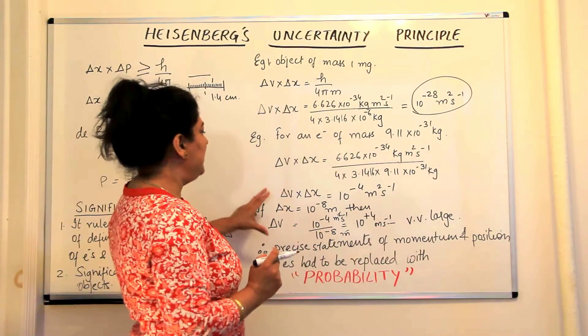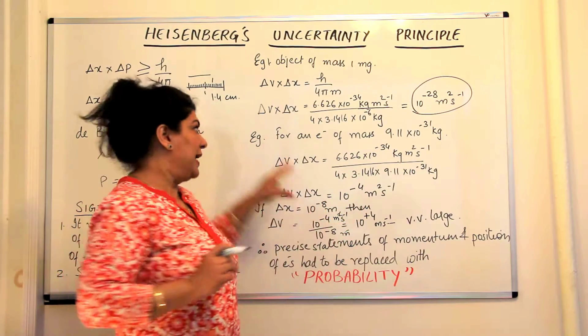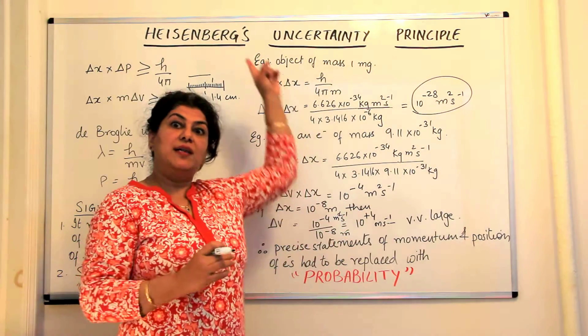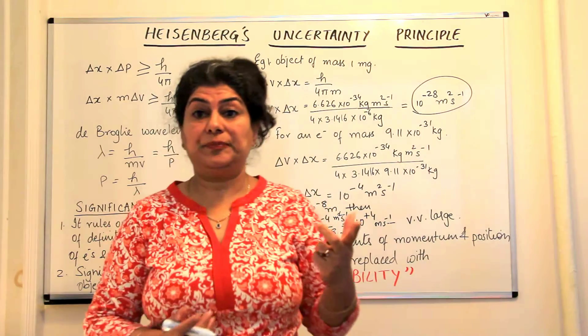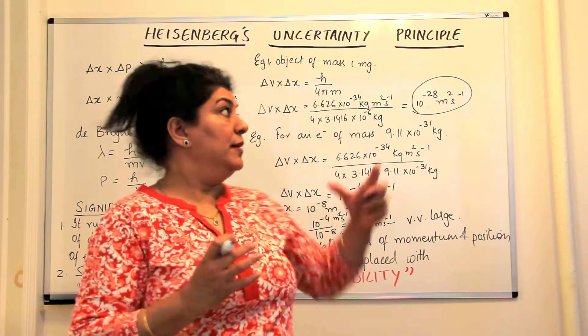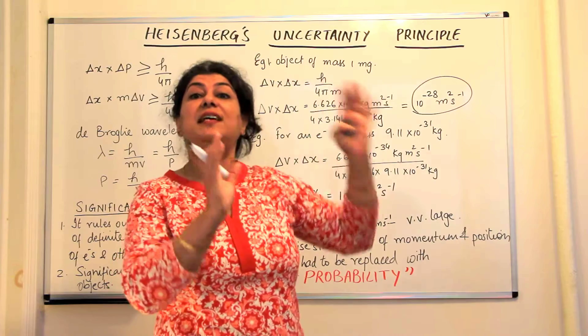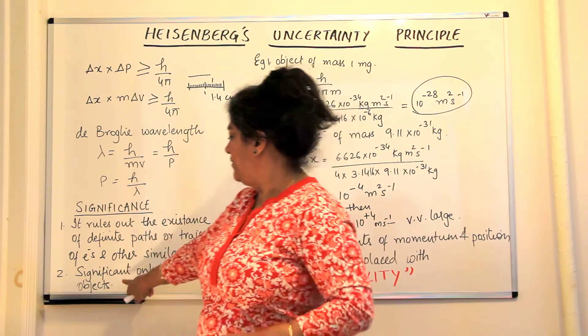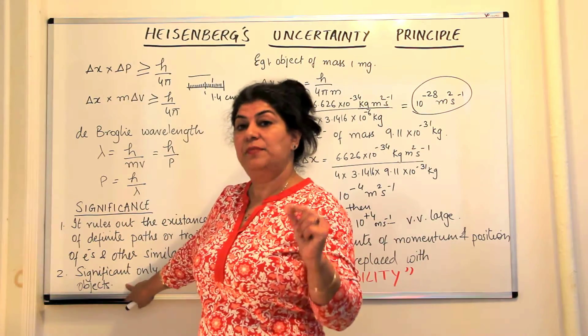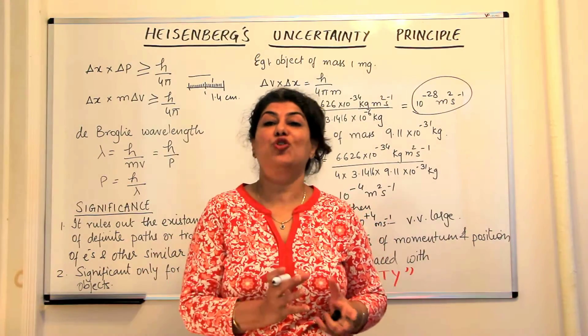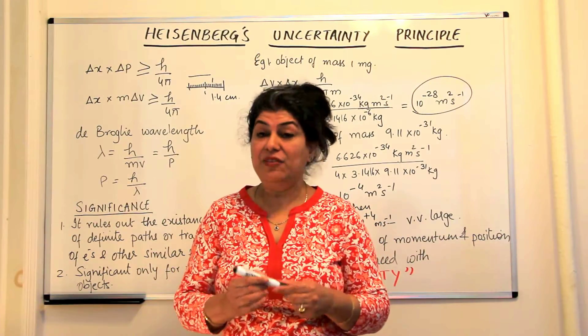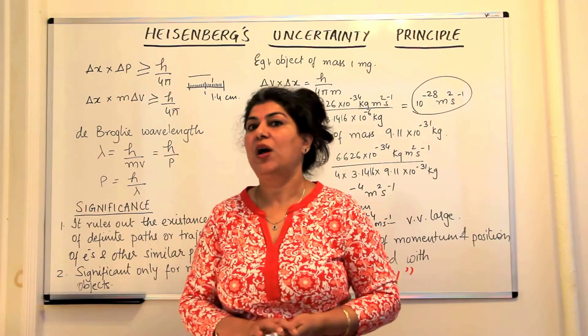We find that when the error is so large for an electron, Heisenberg's uncertainty principle can easily be seen, because the uncertainty here becomes significant. That's the reason why Heisenberg's uncertainty principle is significant only for microscopic objects, not even for an object with a mass of 1 milligram.